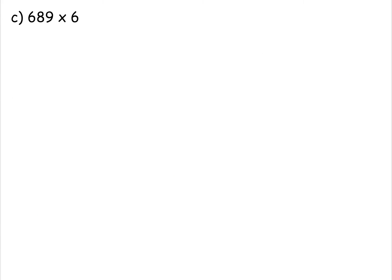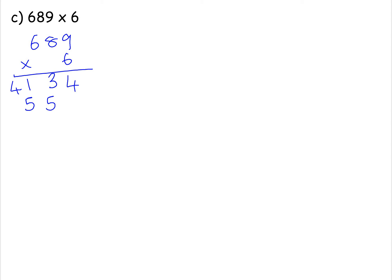Let's look at one more example on short multiplication — by now you may know which method you prefer. Traditional method: 689 multiplied by 6. 9 times 6 is 54 — put the 4 there, carry the 5. 8 times 6 is 48, add your 5 is 53 — put the 3 there, carry the 5. 6 times 6 is 36, add your 5 is 41. So that's the traditional method.